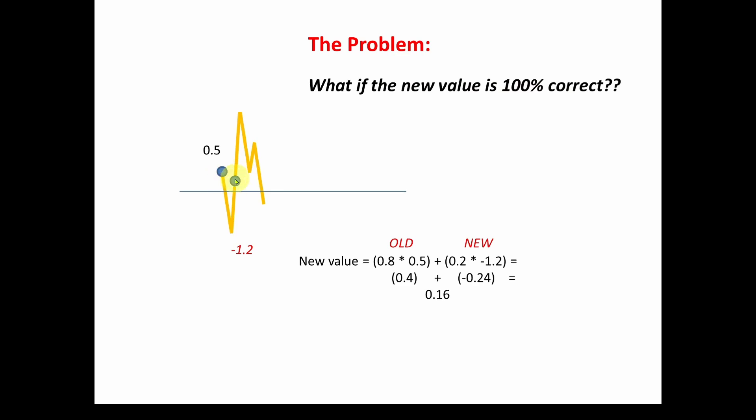We're going to come up with a new value of 0.16, but actually maybe it should be minus 1.2, depending on what's going on in your circuit. So you're taking a risk there. You may get a bad reading instead of the correct reading.